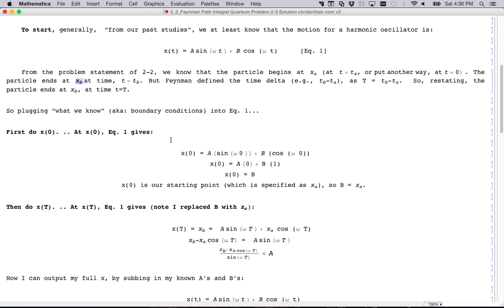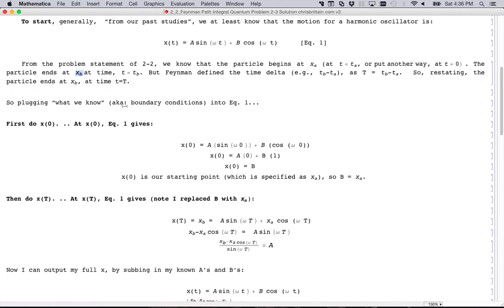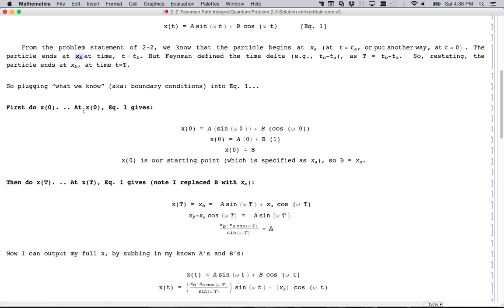All right, so let's plug in what we know into equation 1 to solve for the boundaries. At x sub 0, I simply insert a 0 here. The sine gets killed and the cosine becomes 1, so x sub 0 equals b. But x sub 0 is the beginning state of x, which we know as a. We know that at x sub 0 the particle is at the position x of a, so b equals x of a. That's one down.